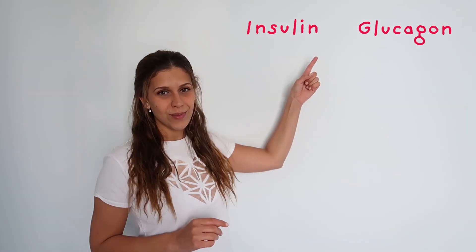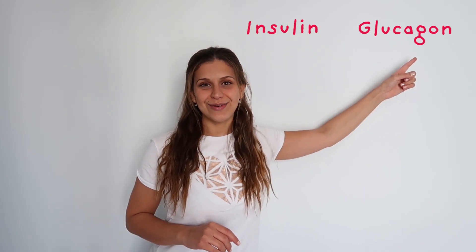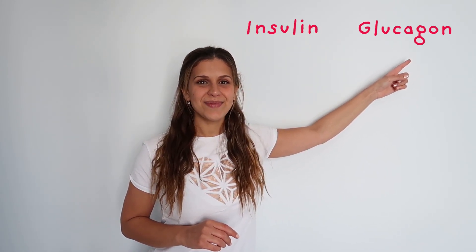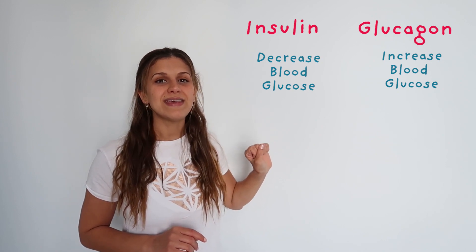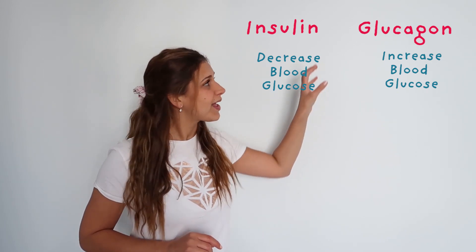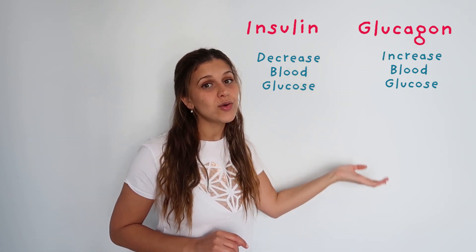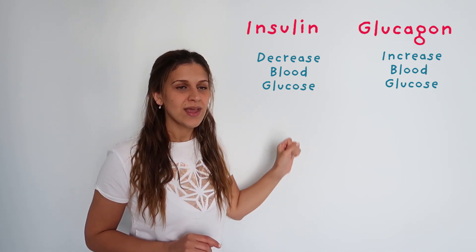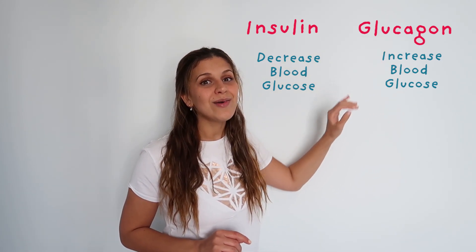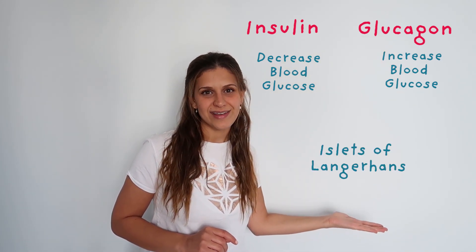The way that the body regulates the amount of sugar in the blood — the blood glucose — is by two hormones: insulin and glucagon. Insulin will decrease the blood glucose, while glucagon will increase the blood glucose. Both hormones are found in the pancreas.